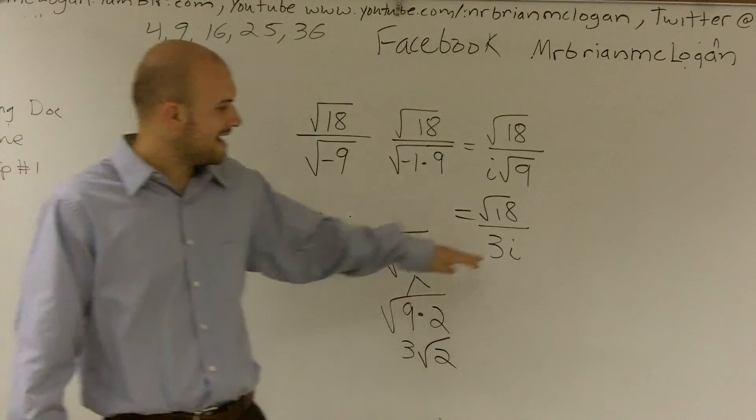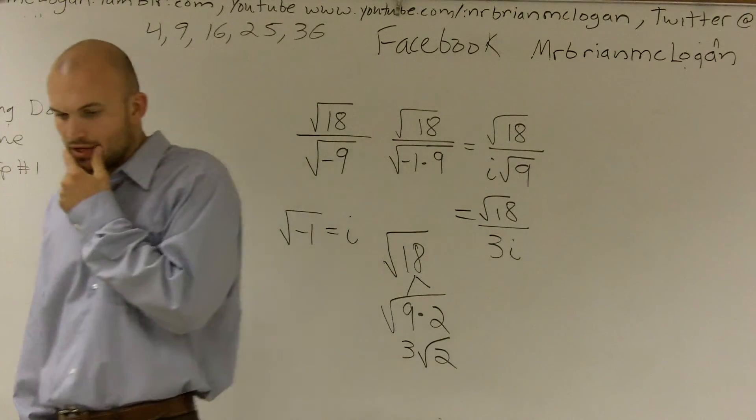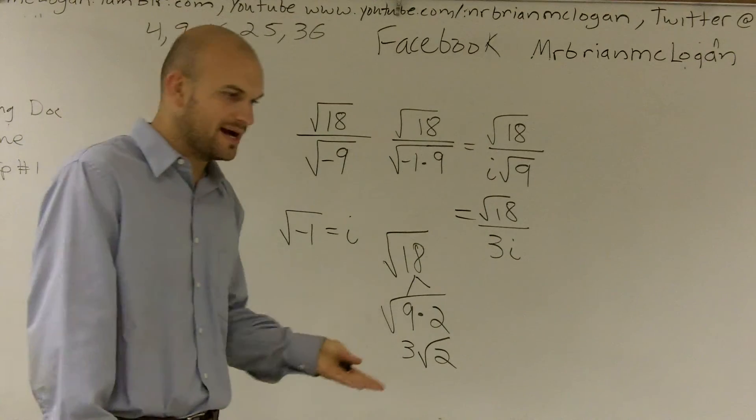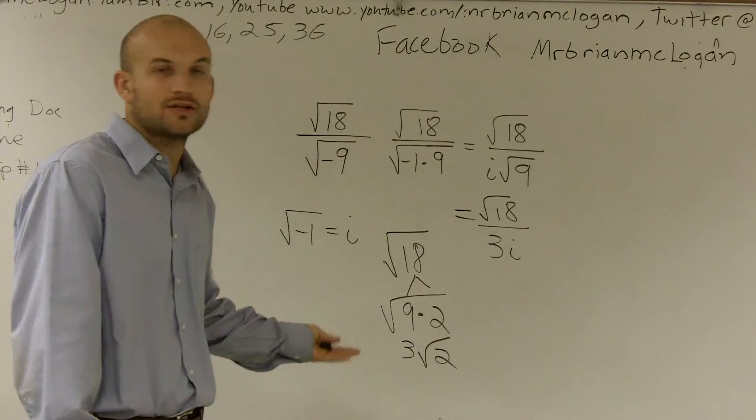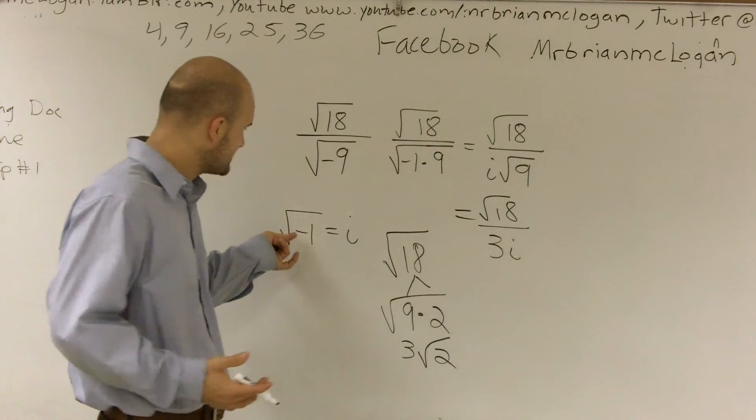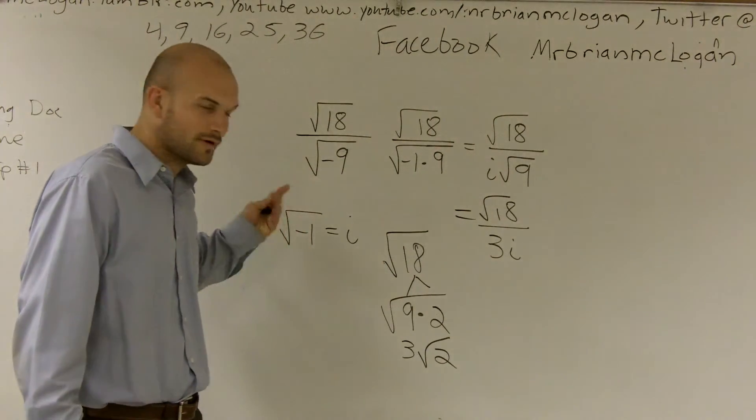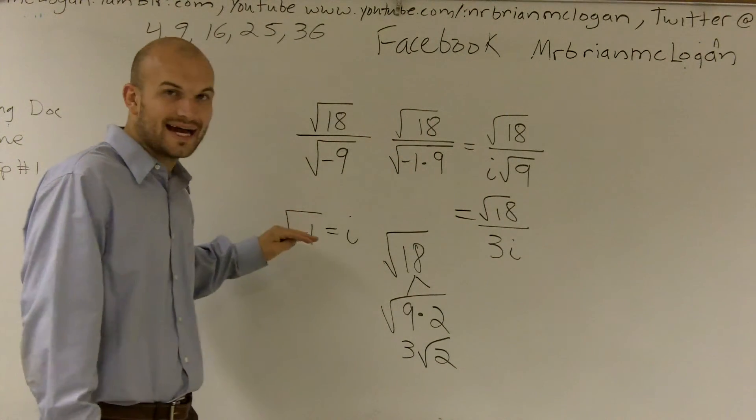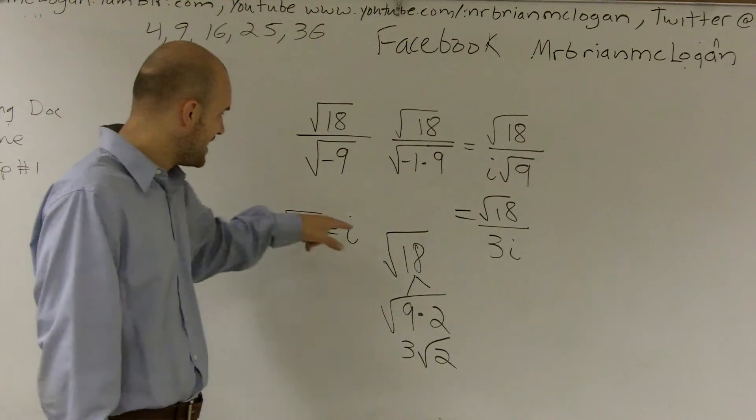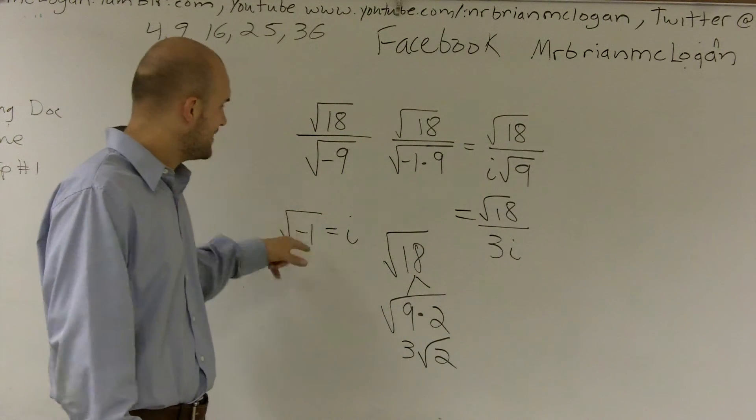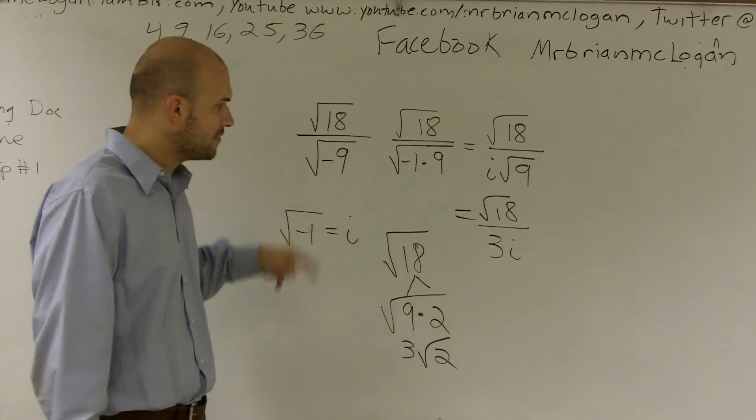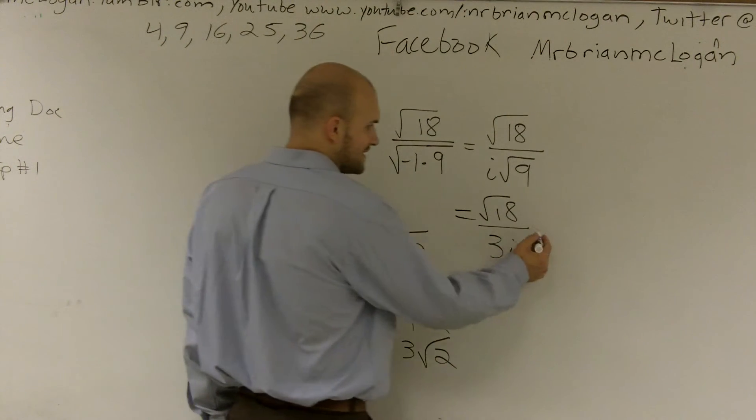Now, we have an i on the bottom. And we cannot divide by i on the bottom because we know what i represents, the square root of negative 1. Well, remember, you can't divide by a radical. So i is equal to the square root of negative 1. You can't divide by a radical. So what I'm going to have to do is I'm going to have to get rid of that.